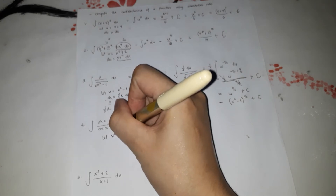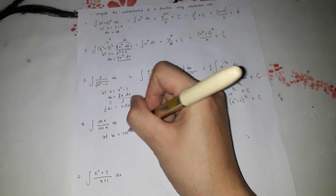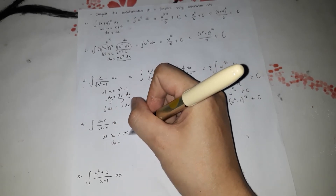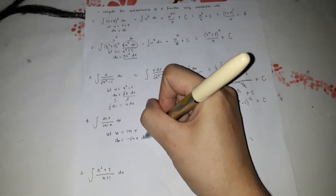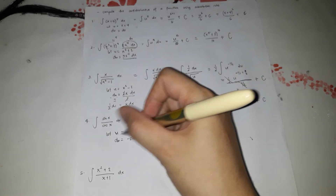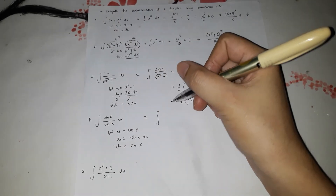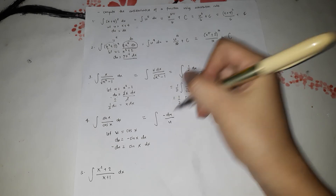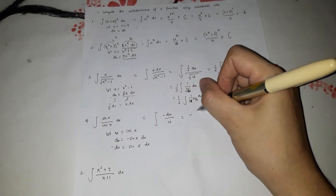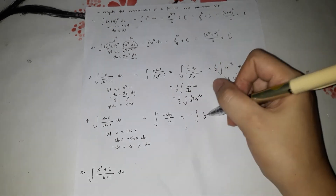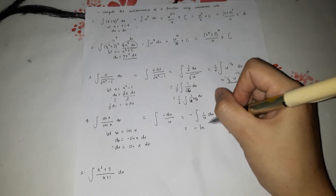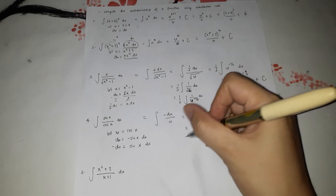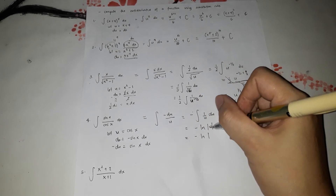For number 4, usually the denominator is what you set as u. So let u be cosine x. Then du equals the derivative of cosine x, which is negative sine x dx. Since sine x dx is positive in the numerator, move the negative sign so that sine x dx equals negative du. Substituting, the integral becomes negative du over u, and the antiderivative of 1 over u is ln of the absolute value of u, so the answer is negative ln of absolute value of cosine x, plus C.